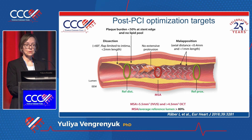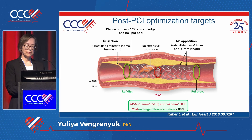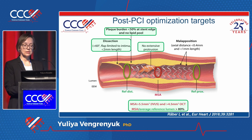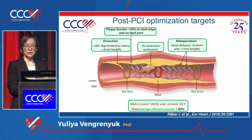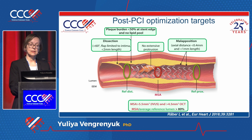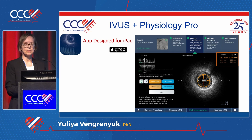This summary slide covers all criteria for optimal PCI to improve patient outcomes: minimal stent area >5.5 mm² by IVUS (slightly smaller at 4.5 mm² by OCT), plaque burden <50% at stent edge, no lipid plaque at the edge, dissection limited to intima only (no medial dissections), no extensive protrusions, and only small malapposition — no gross malapposition especially associated with stent underexpansion.